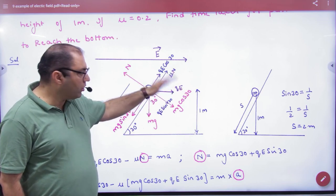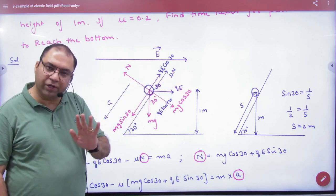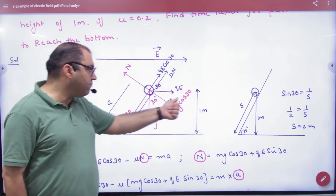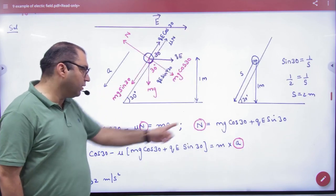QE. QE cos. QE sin. Now, what is normal reaction? Normal reaction N equals mg cos 30 plus QE sin 30. This point.